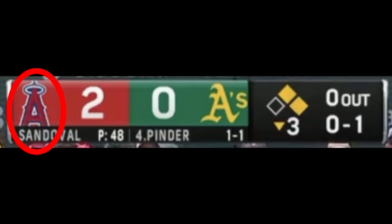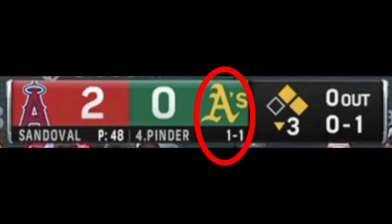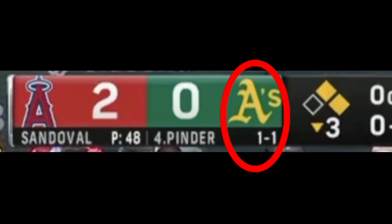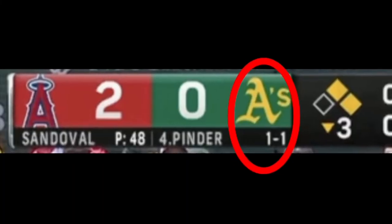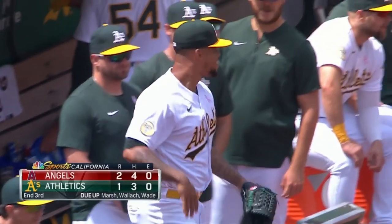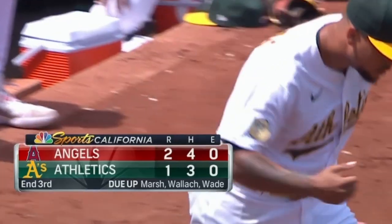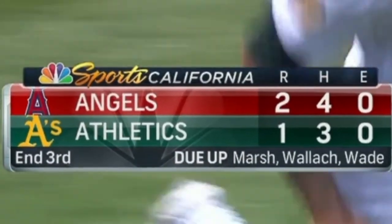First thing you will notice is the team logos. This is the logo of the Los Angeles Angels, and this is the logo of the Oakland A's. One thing I can tell you about this game already is that the A's are the home team. The home team is always listed second, or if the names are stacked on top of each other, the home team is always on the bottom.